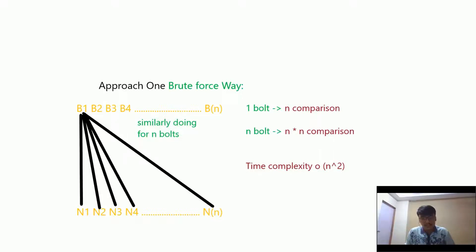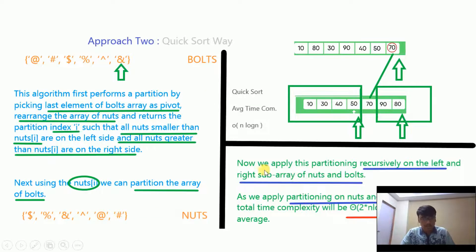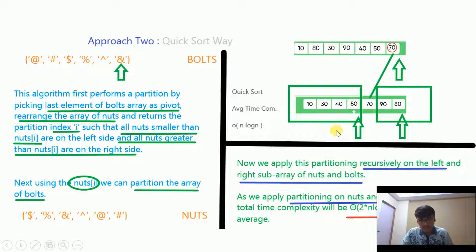Now we will look at a more efficient approach — the quicksort way. In quicksort, we take the last element as pivot and sort elements into two halves: those smaller than the pivot go to the left side, and those greater go to the right side. For example, taking 70 as pivot, all elements smaller than 70 go left and greater go right. Then we recursively apply this with 50 and 80 as pivots. This is how our array gets sorted.